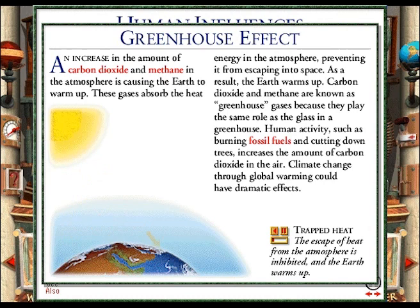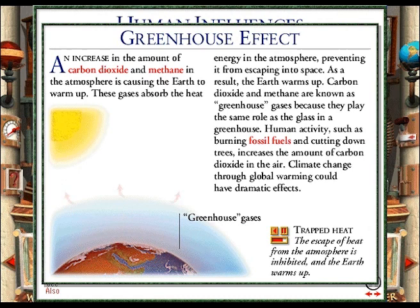Light energy from the sun travels through the atmosphere and reaches the earth's surface where it is absorbed. The light energy is converted to heat energy and some is re-emitted by the earth into the atmosphere. Some of this heat energy escapes directly into space, but much is absorbed by greenhouse gases such as carbon dioxide and methane. So the atmosphere and the earth warm up. This process is called the greenhouse effect.